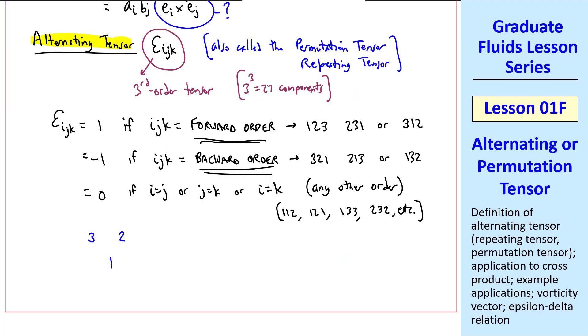Here's how I like to remember it. Draw 1,2,3 like that, and if you're going in mathematically positive direction, 1,2,3, 3,1,2, 2,3,1, epsilon_ijk is 1. If you go around clockwise in the mathematically negative direction, epsilon_ijk is negative 1.